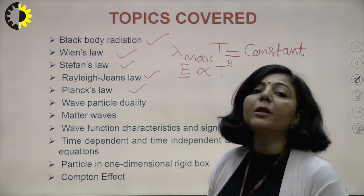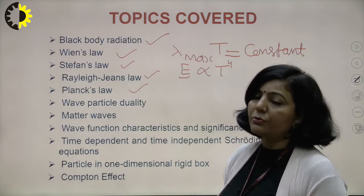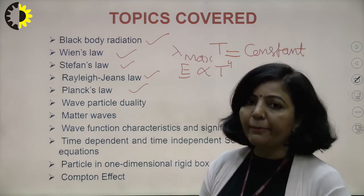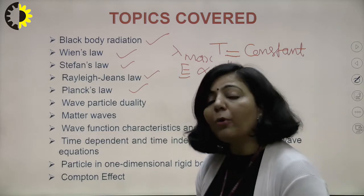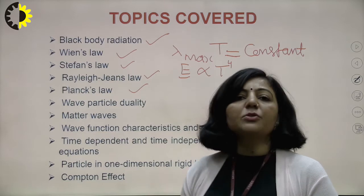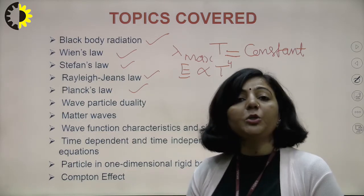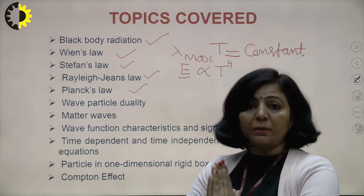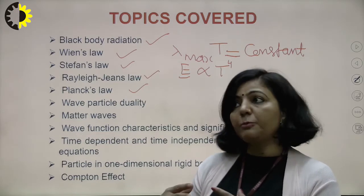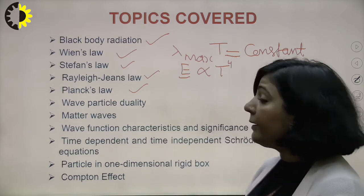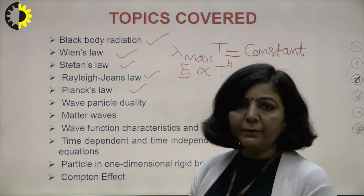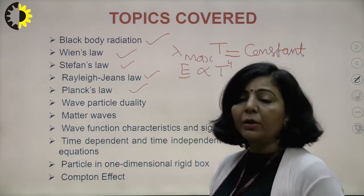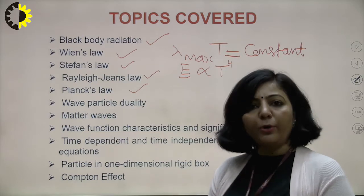E here is energy radiated per unit area per unit time — that is power per unit area or intensity of radiation. Next is the Rayleigh-Jeans law: the energy emitted in terms of wavelength is 8πkT divided by lambda raised to power 4. This was derived on the basis of classical explanations by Lord Rayleigh and Jeans, but the problem was it was applicable only for higher wavelengths, not for shorter wavelengths.